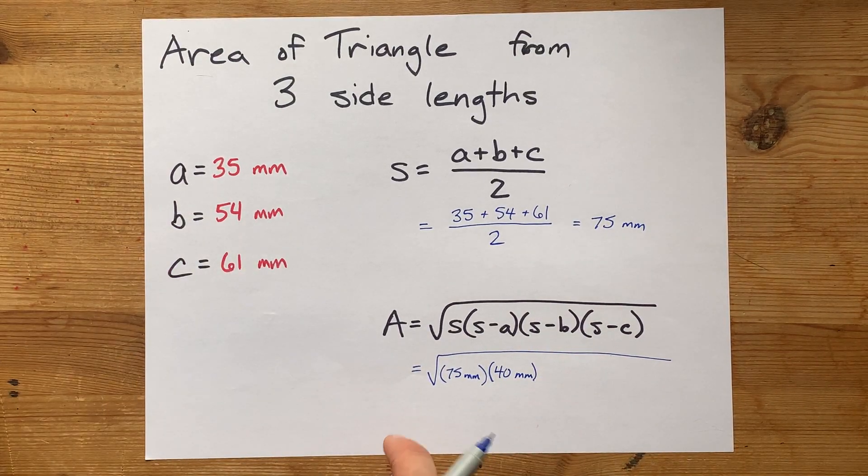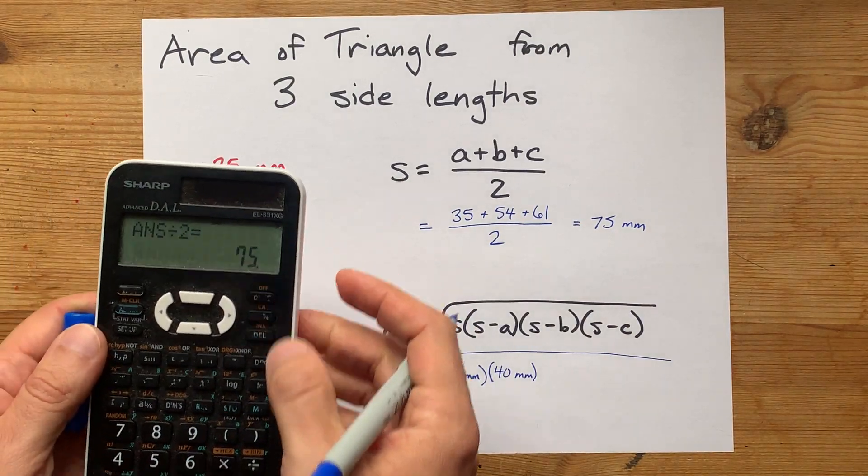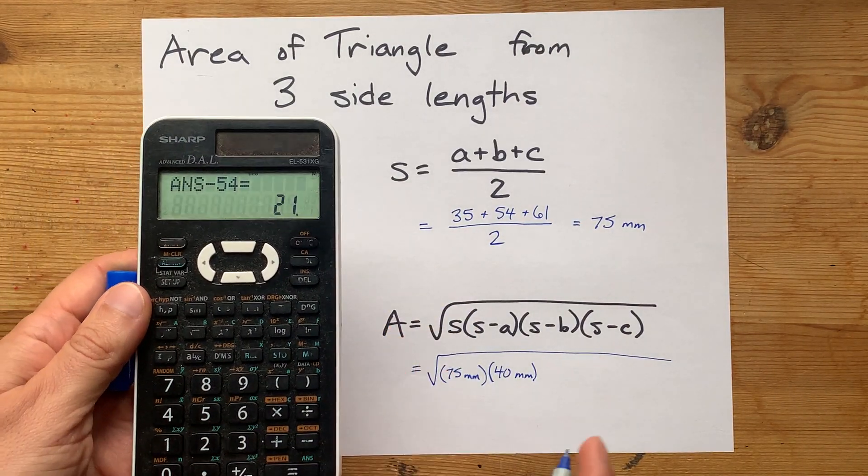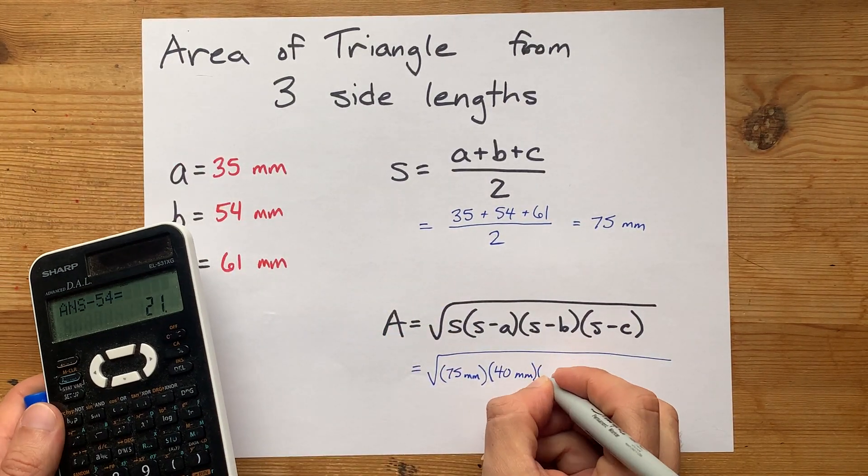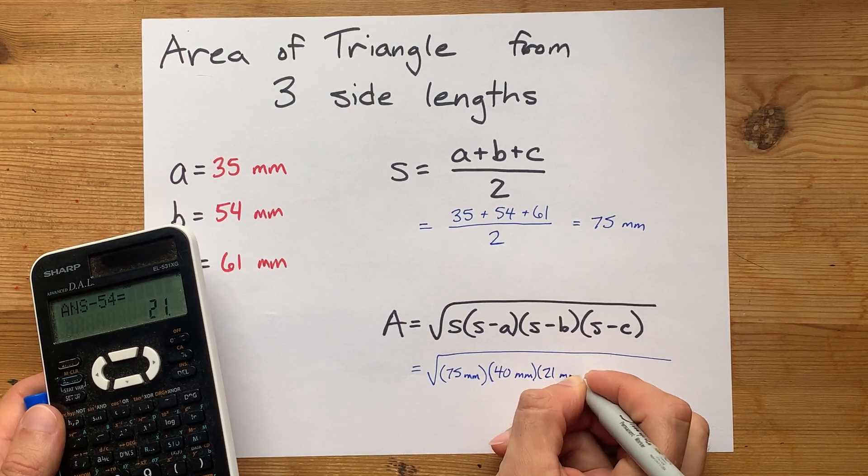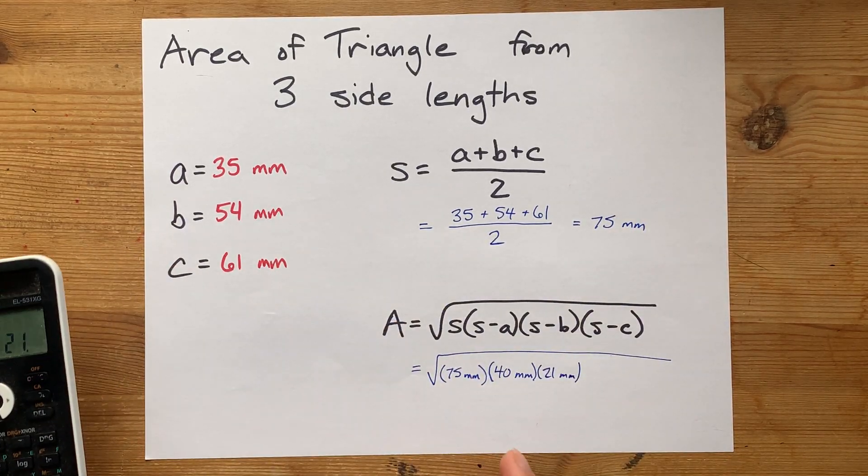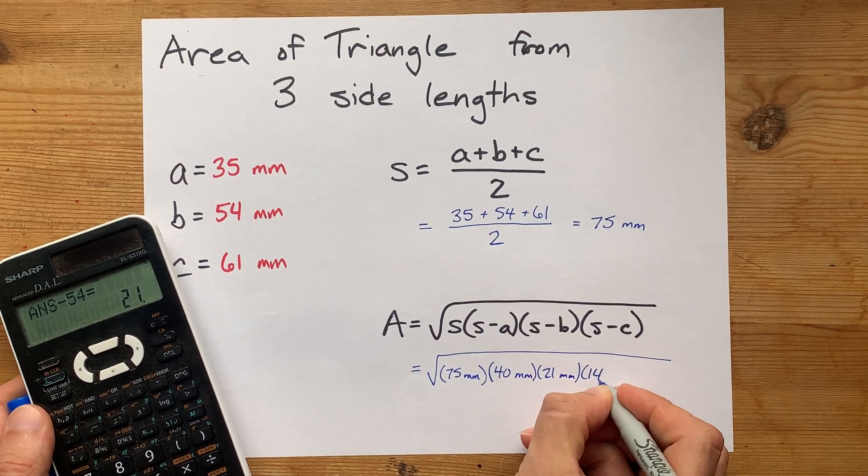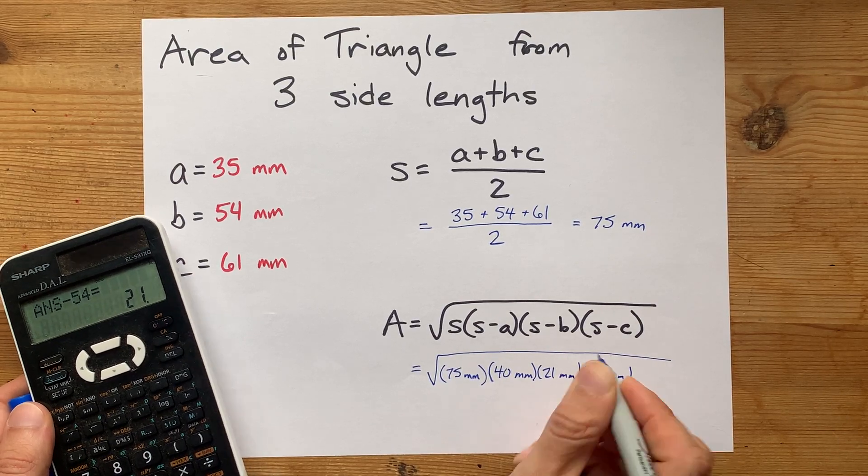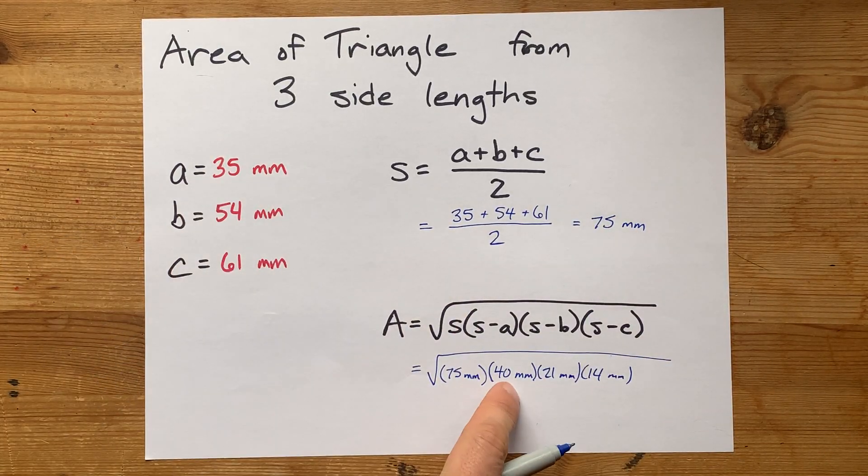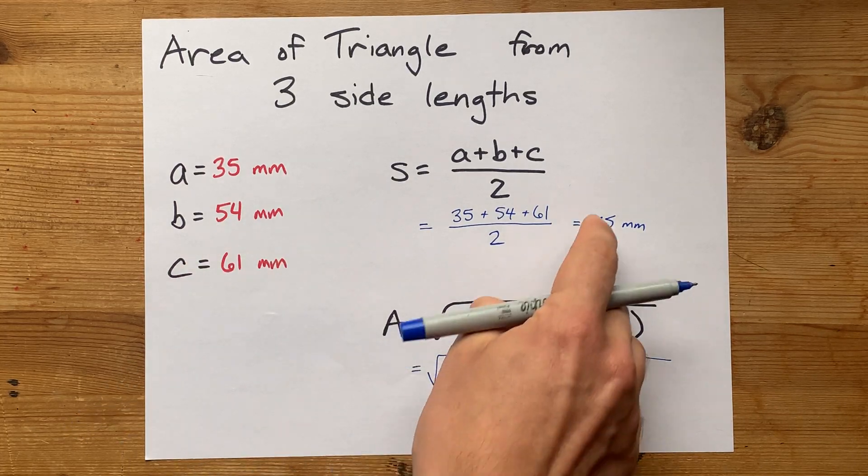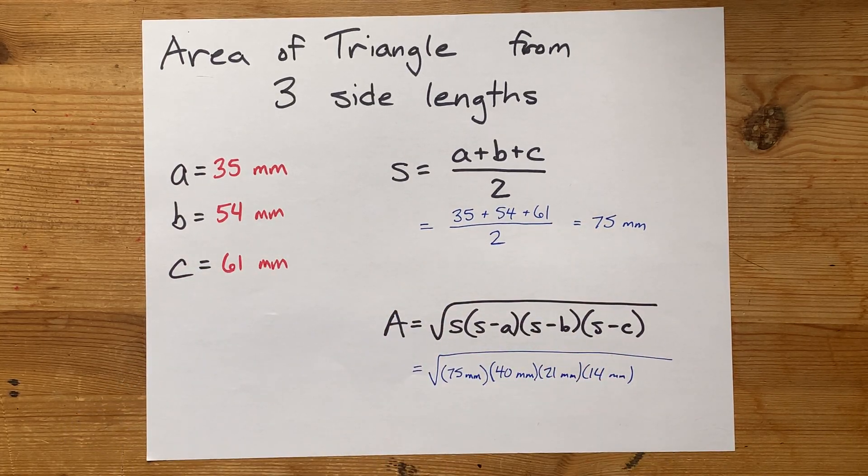That difference is in millimeters. 75 minus 54, and I'm just going to check that on the calculator, turns out to be 21 millimeters. 75 minus 61 is 14 millimeters. Again, 75 minus 35, 75 minus 54, 75 minus 61.